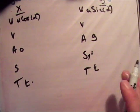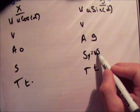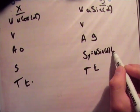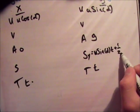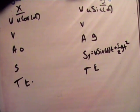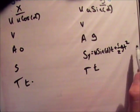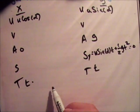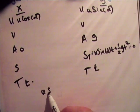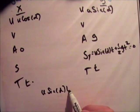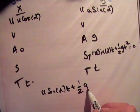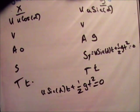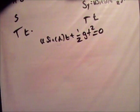So it's ut plus a half at squared, so it's u sin alpha t plus a half g t squared. And we know that's equal to zero. So let's just do that. So we say u sin alpha t plus a half g t squared is equal to zero.